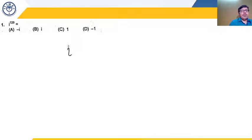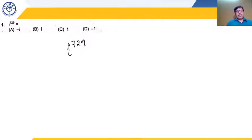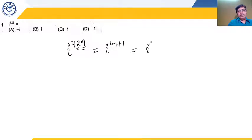From the handout, question 1: find the value of i^729. If 29 is divided by 4, the remainder is 1, so this number is of the form 4n+1. Therefore i^729 = i¹ = i. It is as simple as that.